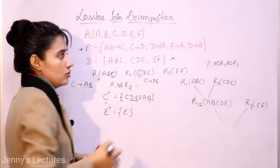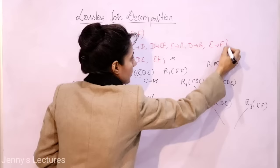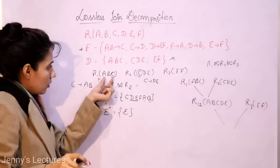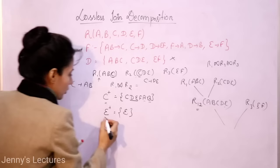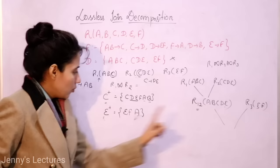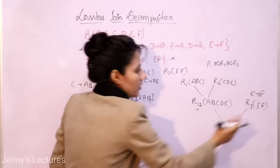Now suppose I add one more functional dependency. Let's re-check. Taking R1 and R2 first: the common attribute is C, and C closure still contains all attributes of R1 and R2, so that join remains lossless. Now combining with R3: the common attribute is E. With the new FD added, E closure now includes F — meaning E can drive F, which is all the attributes of R3.